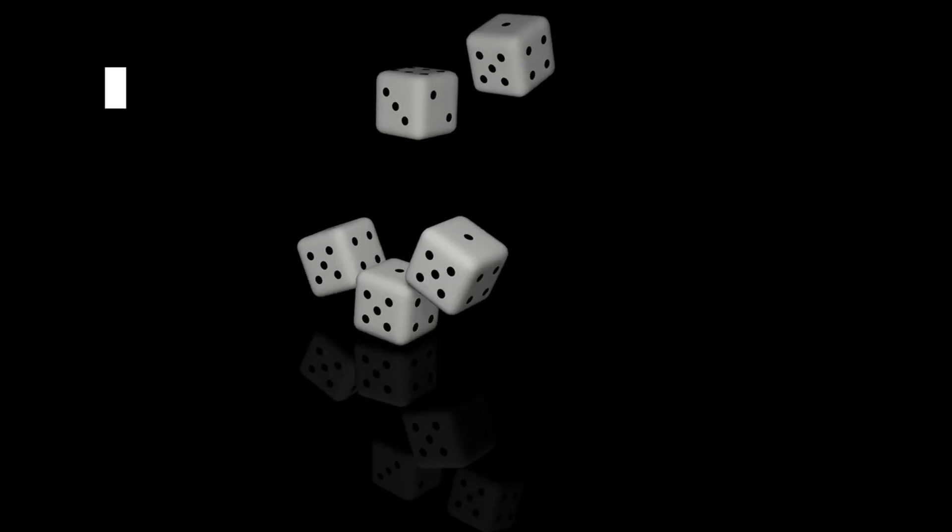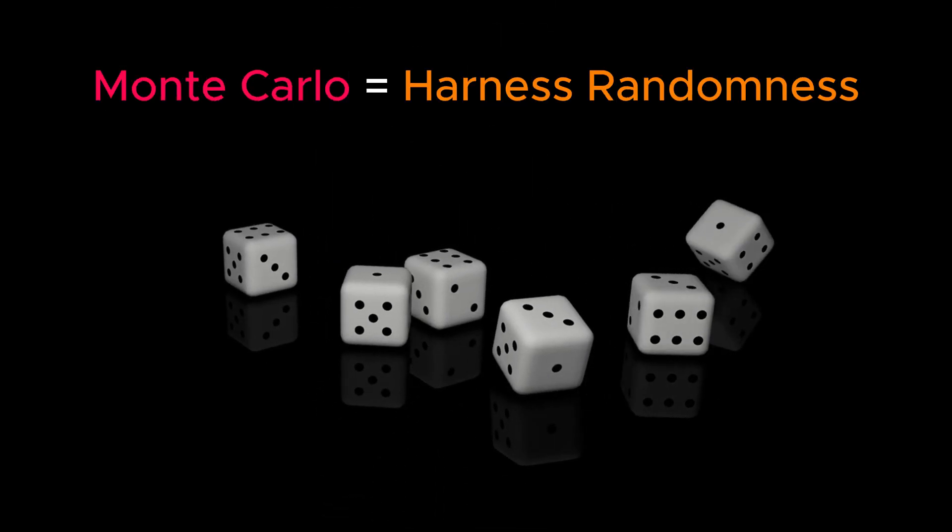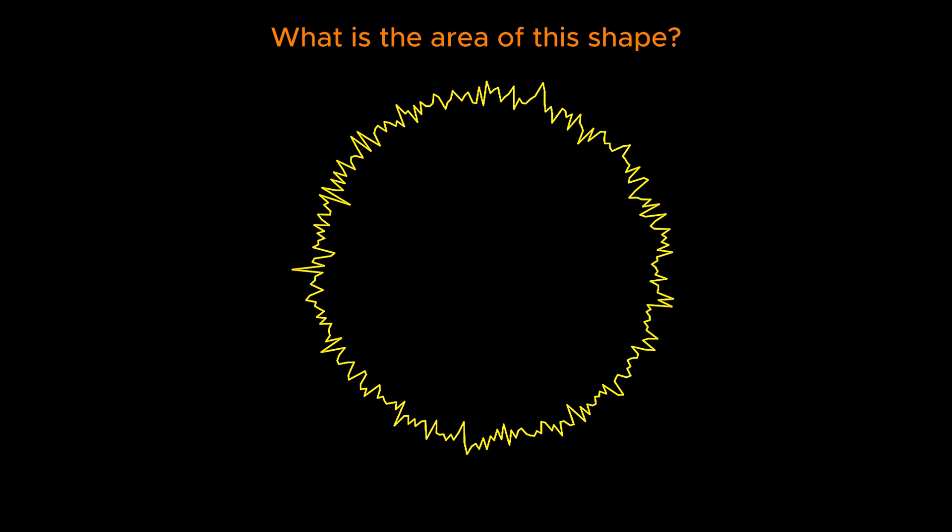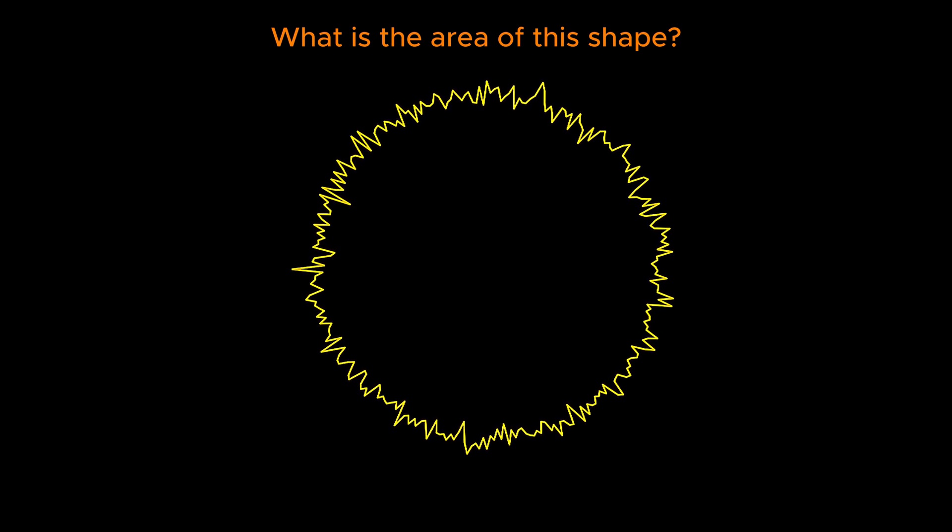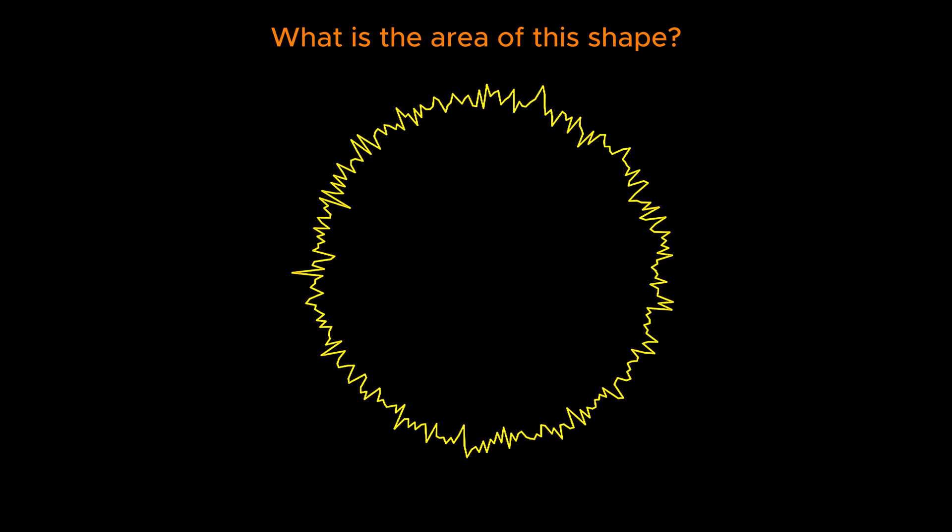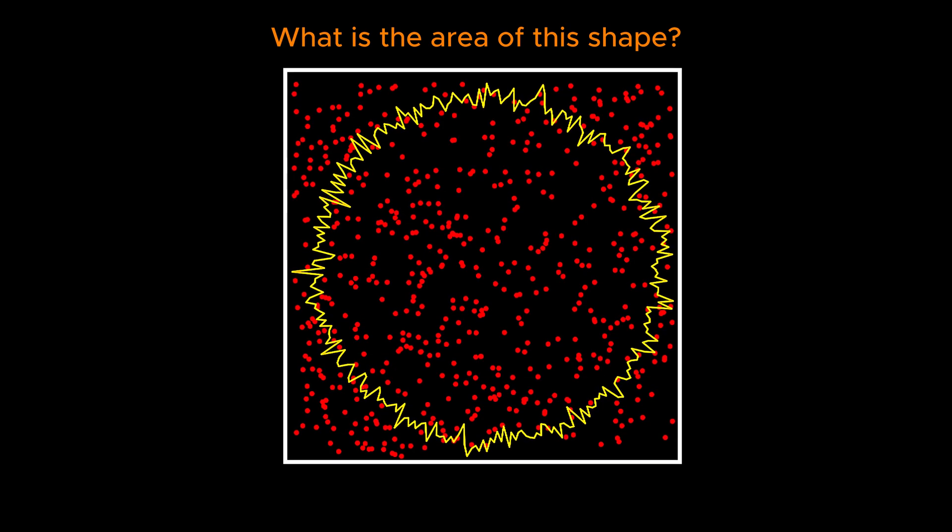The Monte Carlo Method works by harnessing randomness to solve problems that are too complex for exact solutions. Imagine you want to calculate the area of an irregular shape. Instead of using traditional geometry, you randomly scatter points over a square that encloses the shape.